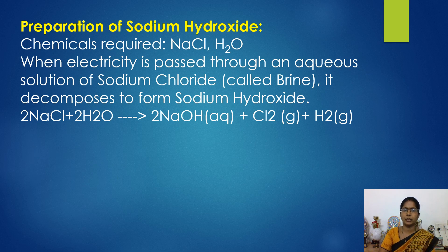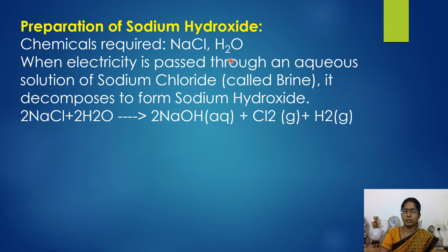Let's see the preparation of sodium hydroxide. The chemical formula of sodium hydroxide is NaOH. To prepare this, the required chemicals are NaCl (common salt) and H2O (water). When sodium chloride is dissolved in water, it is known as brine solution.